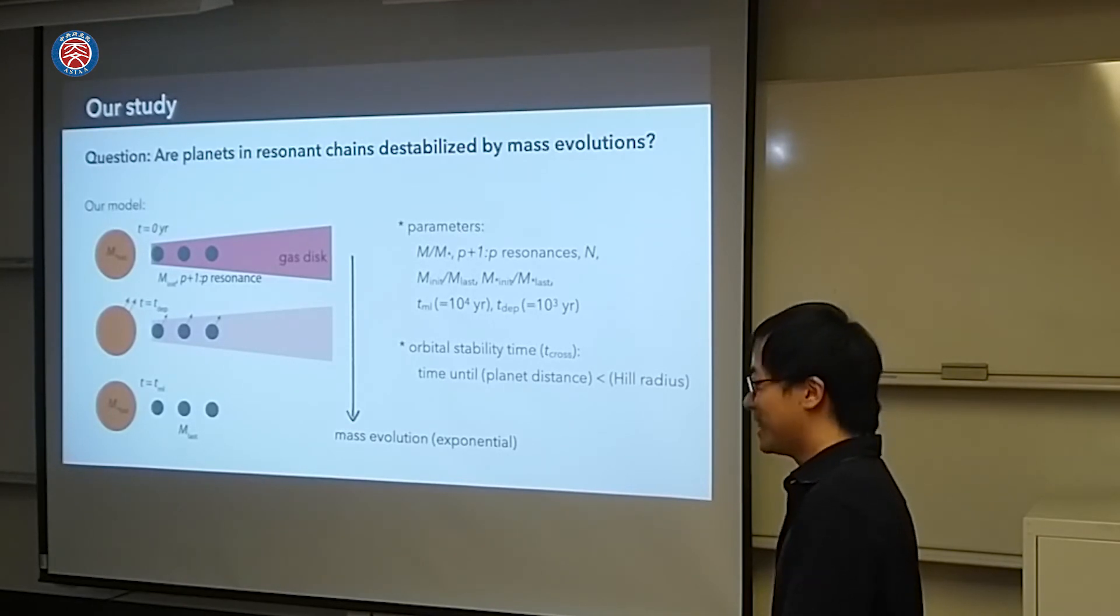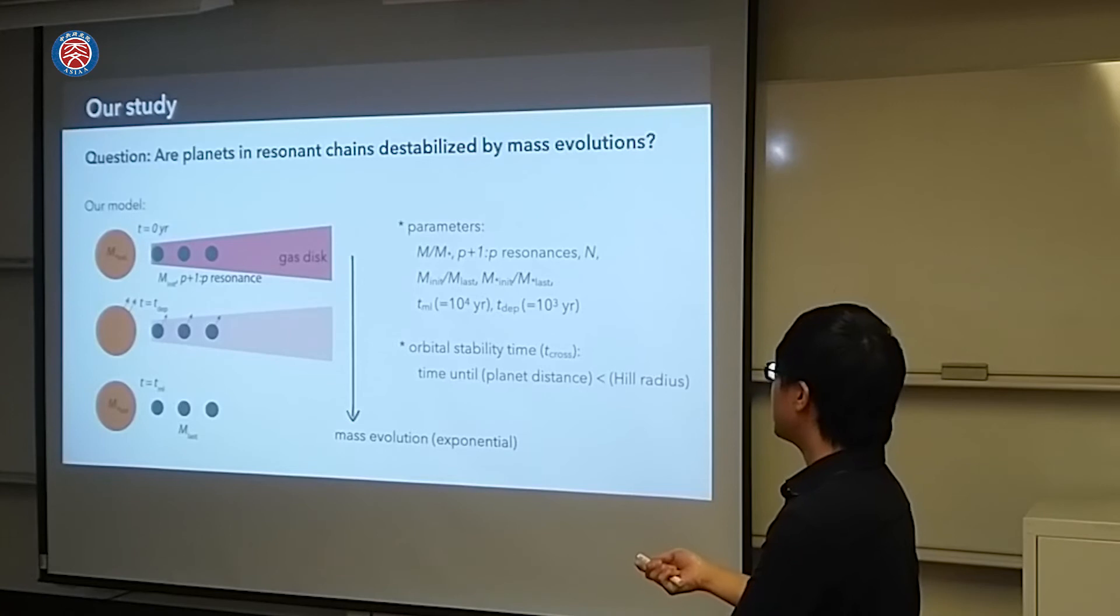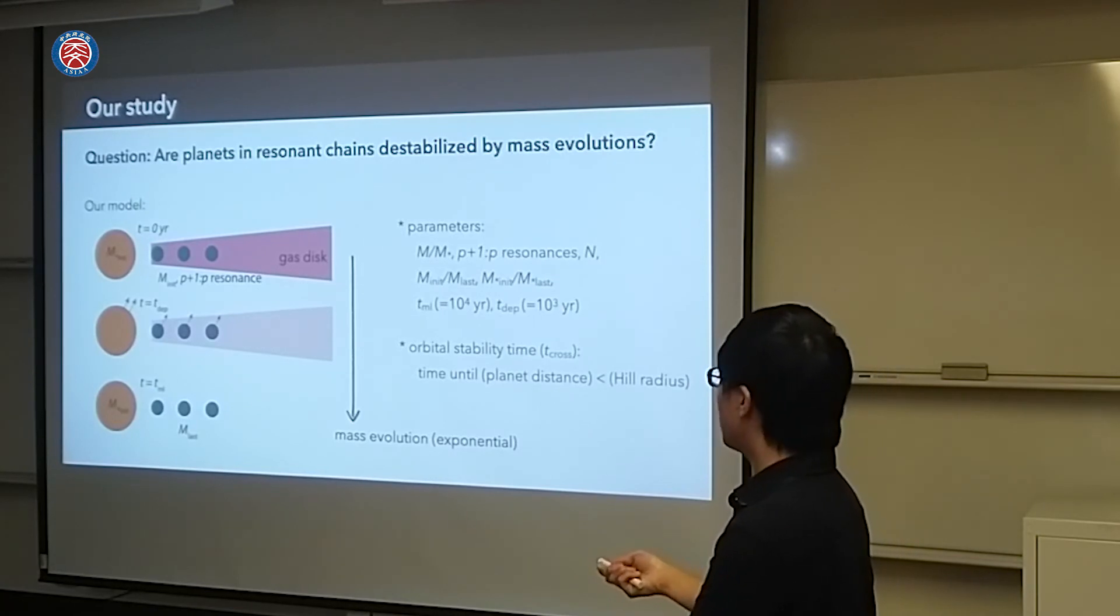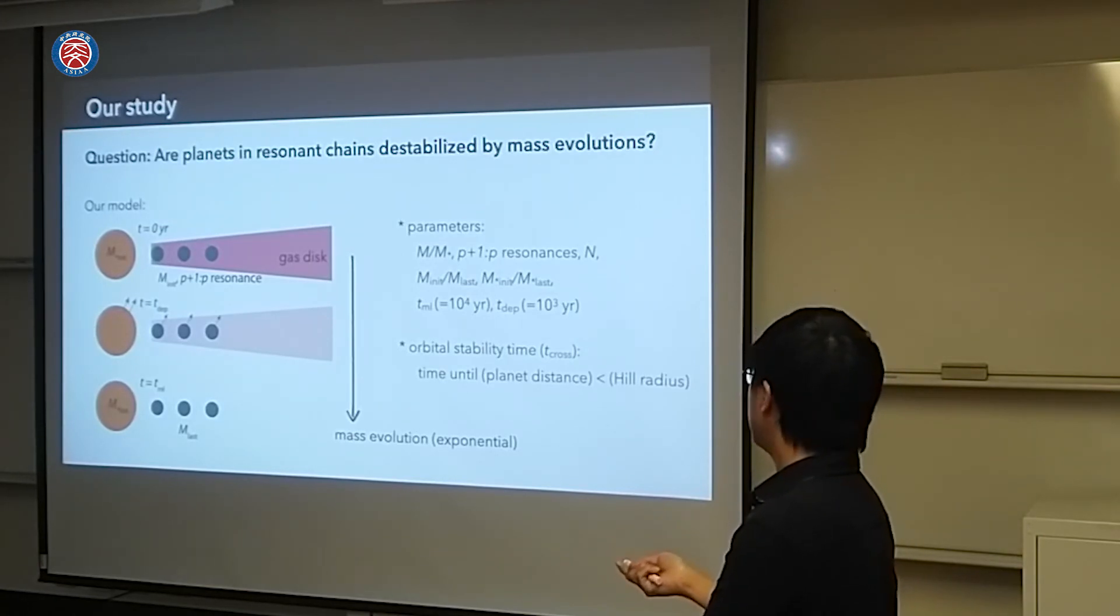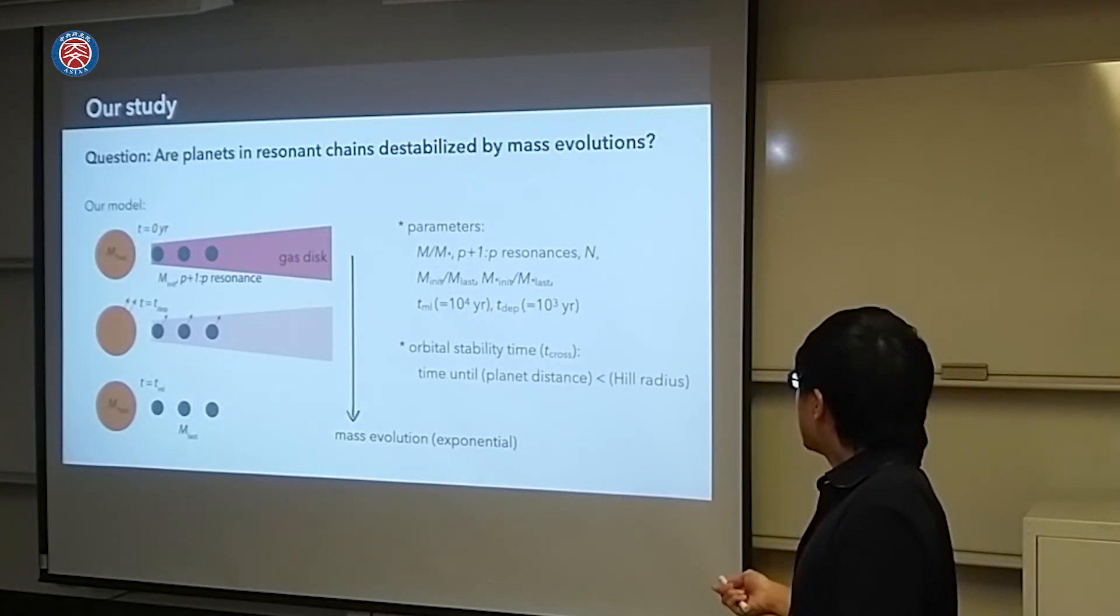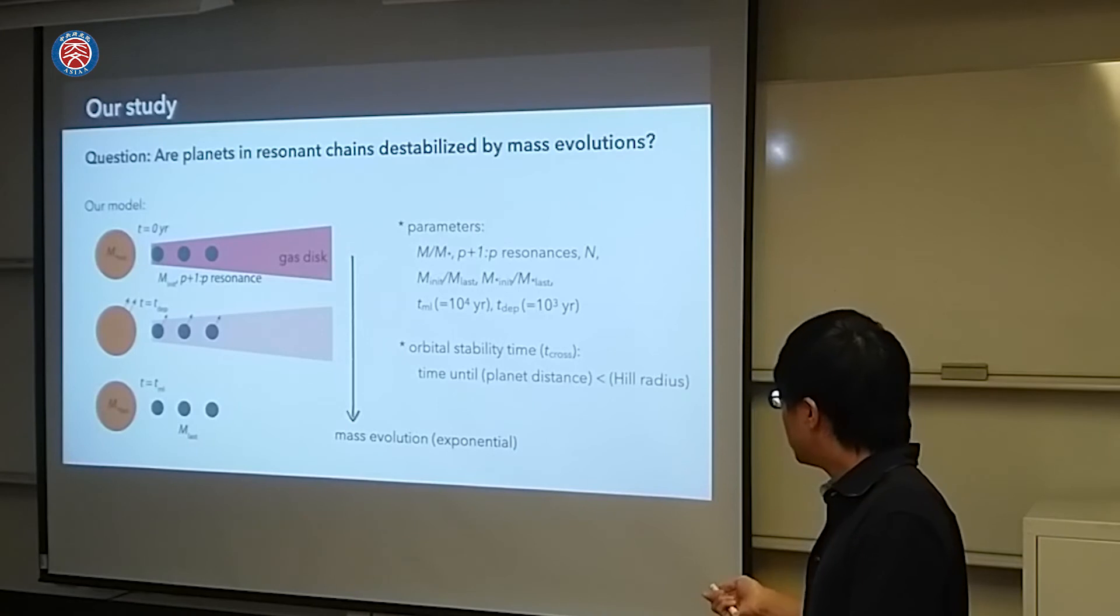The answer is yes. We construct this kind of model. N planets are trapped in resonance in gas disk. Gas disk decays in gas depletion time scale. And stellar mass with dissipation time scale. We construct a very simple model. Mass evolution is operated by simple exponential function. We construct such parameters, and we measure the orbital stable time scale, orbital stability time scale.